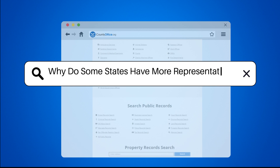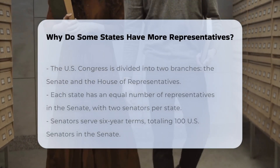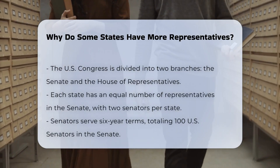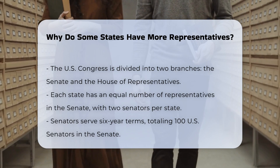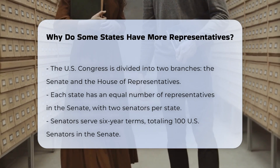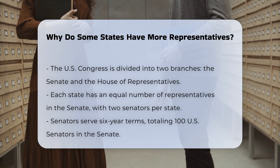Why do some states have more representatives? The U.S. Congress is divided into two main branches — the Senate and the House of Representatives. Each of these branches has a distinct way of representing the states.